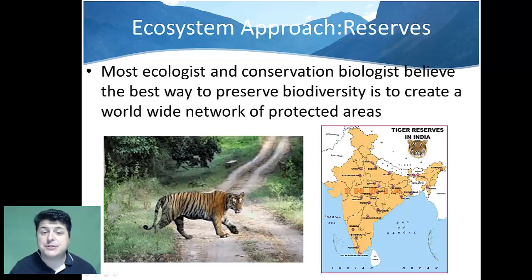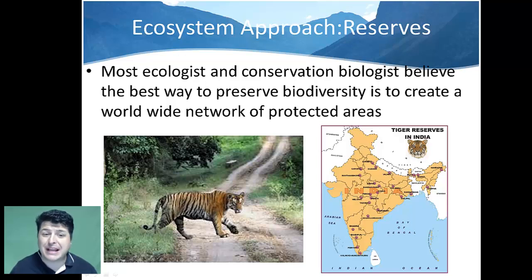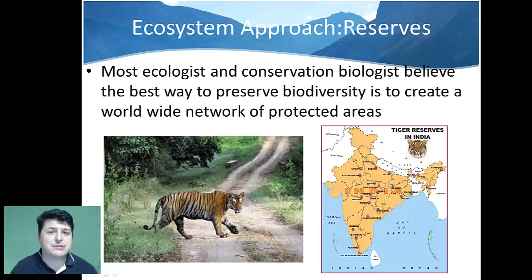Another example of an ecosystem approach is the establishment of reserves. Most ecologists and conservation biologists believe the best way to preserve biodiversity is to create a worldwide network of protected areas. Currently, only 12% of the Earth's land area is protected, and only 5% is strictly prohibited from harmful human activities. Conservation biologists call for full protection of at least 20% of Earth's land area representing multiple examples of all biomes. For instance, government entities in India have established biological reserves to help sustain the Indian tiger population, which is at great risk for extinction.